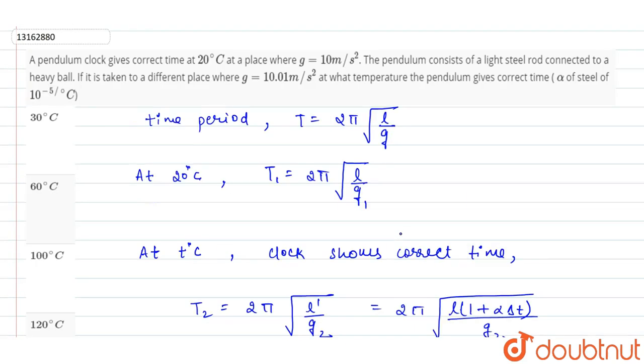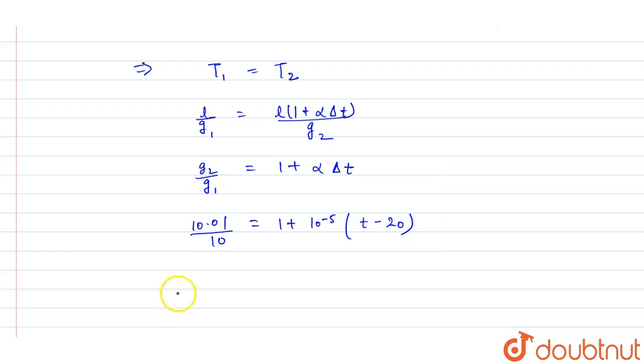If we solve this, then T minus 20 will be equals to 10 to the power of 5 into 1.001 minus 1.